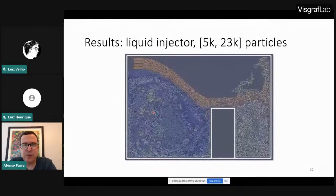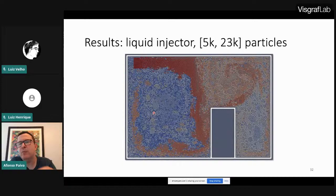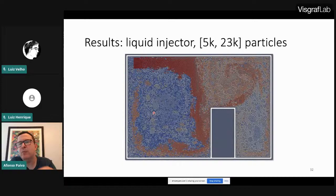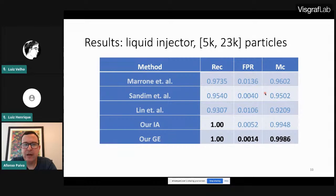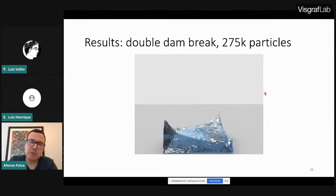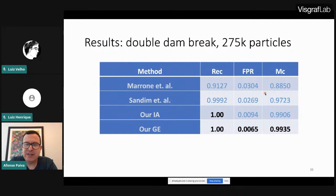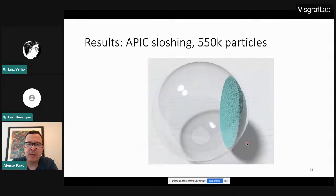There is one more 2D case with an injector in a complex geometry, with particle counts varying from 5,000 to 23,000. Again, our geometric enclosure is best, interval is second best, and Marcos's method is third. In this case, our method separates somewhat from the others, while Mahoney performed relatively well. Moving to 3D: a 3D double dam break with 275,000 particles — no Lean since they only did 2D. Again, our geometric enclosure is best, interval second, Marcos third, and we significantly outperform Mahoney.